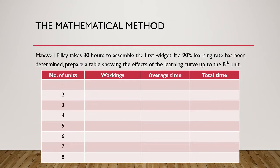Looking at the table, notice a key difference when working with the mathematical model: I am not limited to doubling points only. Rather, I can calculate every point up to the 8th unit, even if it is not a doubling point. In addition, because I am using the formula yx = ax to the power of b, I can calculate any point in any order — for example, the average time for the first 7 units without having to first calculate units 2, 3, and so forth in sequence.